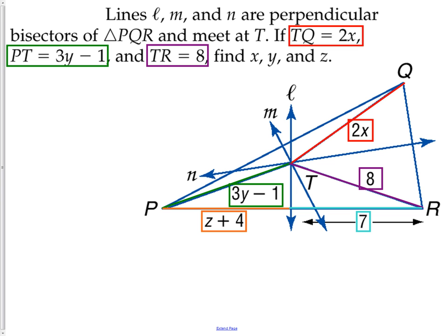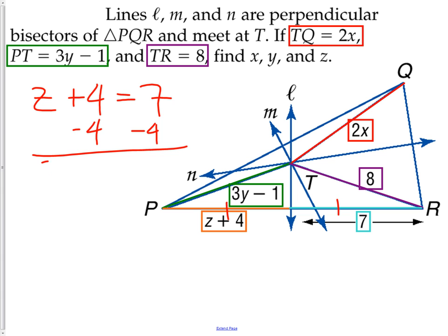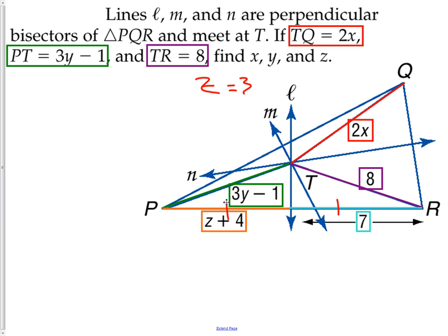We'll start with the first piece: we know that L is bisecting PR, which means the two pieces are equal. So I can say z + 4 = 7. Subtracting 4, I get z = 3. Next, an important thing to know is that since all of these bisectors meet at the center point, the green segment, the red segment, and the purple segment are all equal. We can set 2x = 8 because the red segment and the purple segment are the same size.